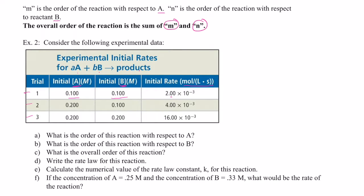Then we do a second experiment. We double the concentration of A to 0.200 molar while leaving B at 0.100 molar, and the rate goes to 4.00 times 10 to the negative 3rd molarity units per second. Notice that when I doubled the concentration of A and kept B constant, the rate of the reaction doubled. That is a direct relationship — when one thing doubles and the other doubles as a result, we call that a first order reactant. So A is a first order reactant, meaning A is raised to the first power.